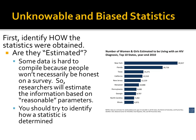On the right-hand side here, you see a chart put out by the Kaiser Family. The chart shows the number of women and girls estimated to be living with HIV — the top 10 states in the year ending 2010. You'll see New York, Florida, Texas, California, New Jersey, Maryland, Pennsylvania, Georgia, North Carolina, and Illinois.